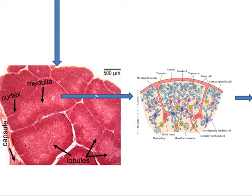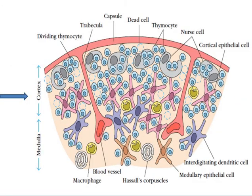Thymocytes whose T-cell receptors bind to MHC-peptide complexes with too high an affinity are induced to die — this is called negative selection. Those thymocytes that bind to MHC-peptide complexes with an intermediate affinity undergo positive selection, resulting in their survival, maturation, and migration to the thymic medulla. Most thymocytes do not navigate the journey through the thymus successfully; it is estimated that 95 percent of thymocytes die in transit, the majority because they have too low an affinity for the self-antigen MHC combination and fail to undergo positive selection.